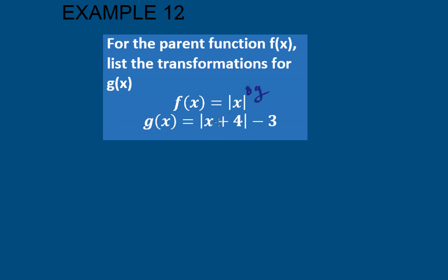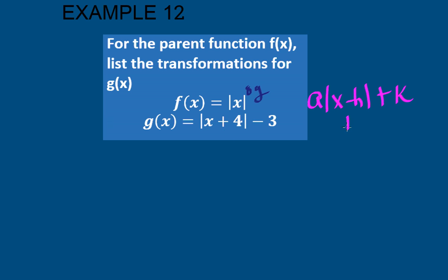First of all, we need to recall that a times the absolute value of x minus h plus k is our original vertex form. So the first thing that happened was, if we look, the inside is plus 4, so I have a plus 4 here, and then outside I have a minus 3.